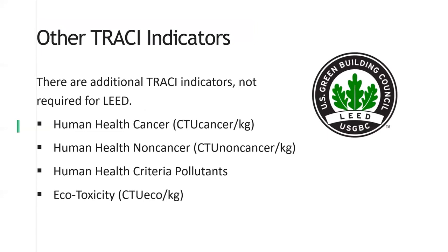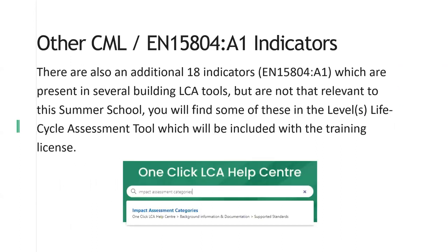There are different types of indicators also, but not all are relevant for the type of LCA we're going to be doing. In the US we have some additional TRACI indicators, but for example in our LEED US tool these are not mandatory indicators — you only have those indicators called out earlier. These additional ones are: human health cancer, human health non-cancer, human health criteria pollutants, and eco-toxicity. These can be calculated with some data sets, but as they are not mandatory, not all EPDs even have data on these indicators. We also have other CML indicators or EN 15804 A1 indicators — 18 additional indicators on top of those six already covered. Most of these will not be present in the calculation tools, but the Levels tool, which will also be included with the training license, will actually have some of these indicators related to energy.